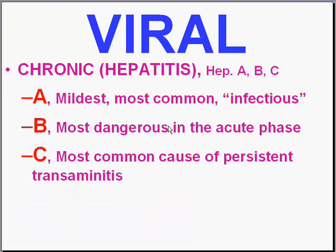We have covered the acute transient and chronic latent viruses. Let's talk about the regular chronic viruses. The best example is chronic hepatitis. The word 'chronic viral infections' is almost synonymous with the various hepatitises. We're up to about six of them now — A, B, C, D, E — with A, B, and C being the most common and the ones of most concern.